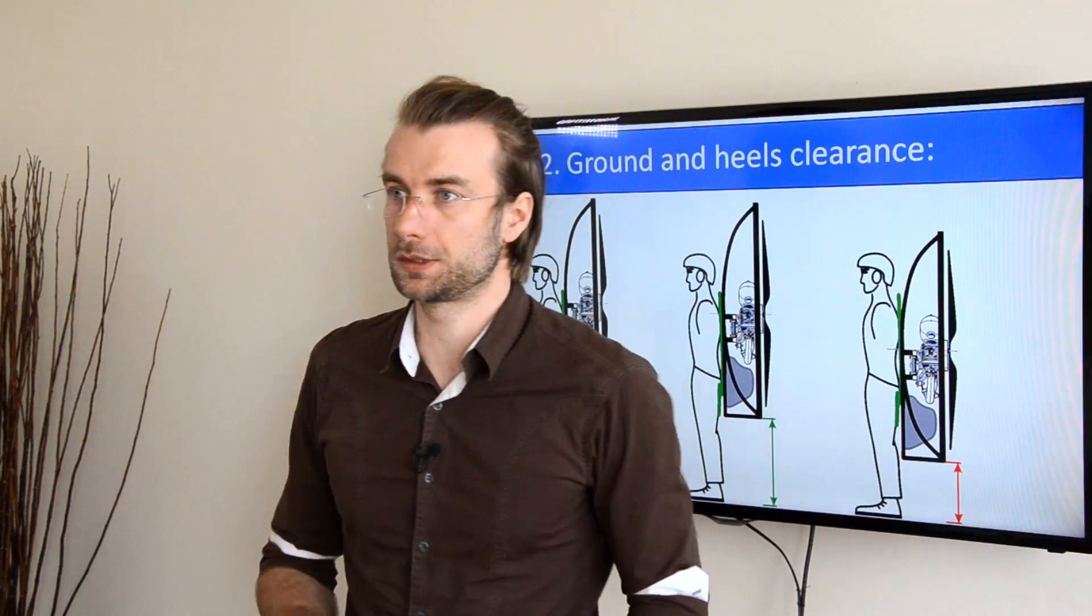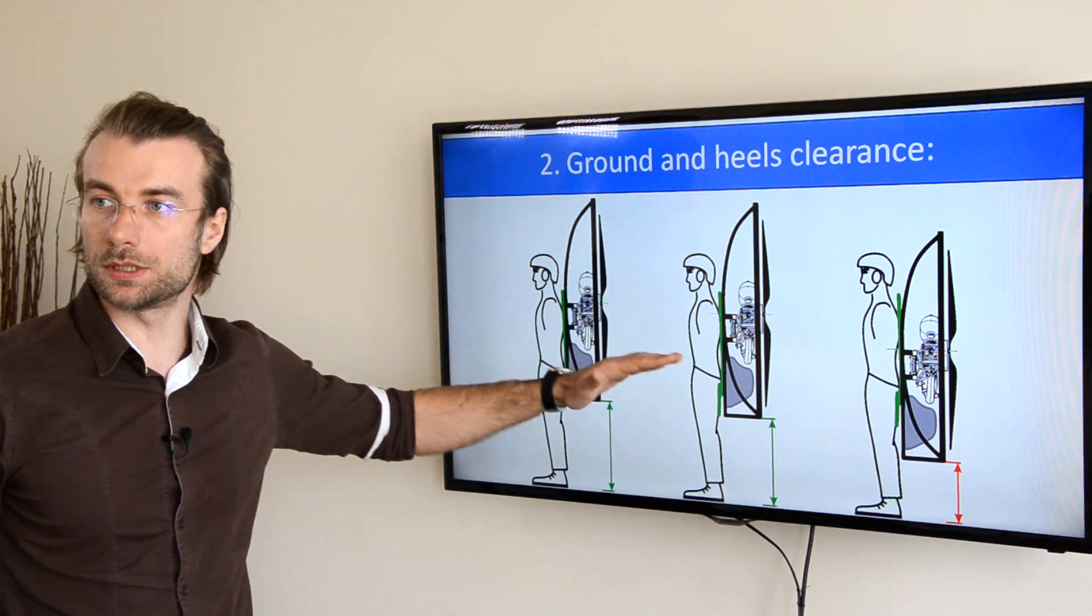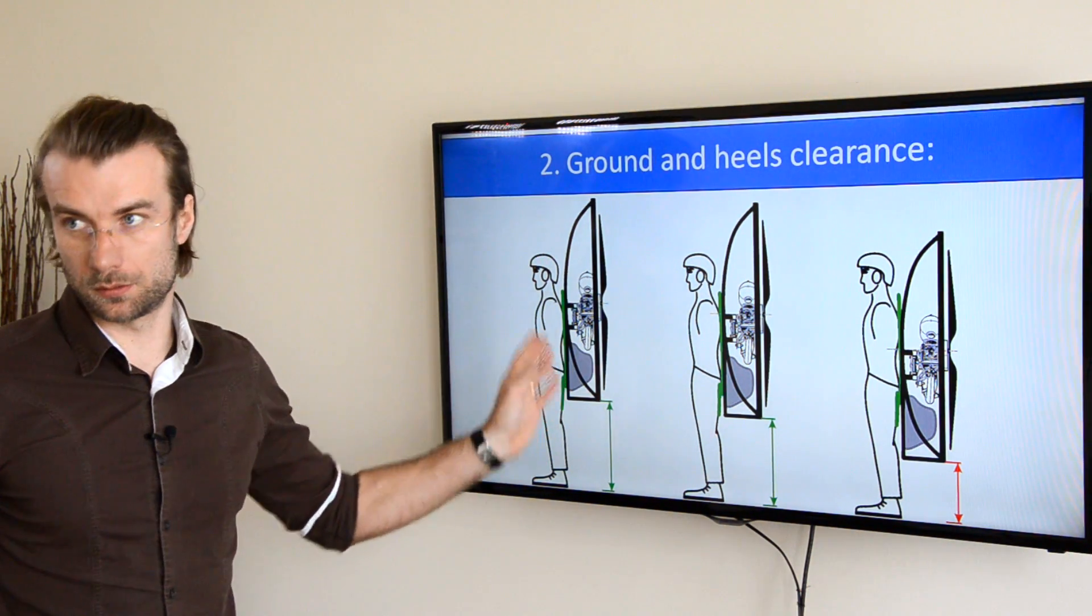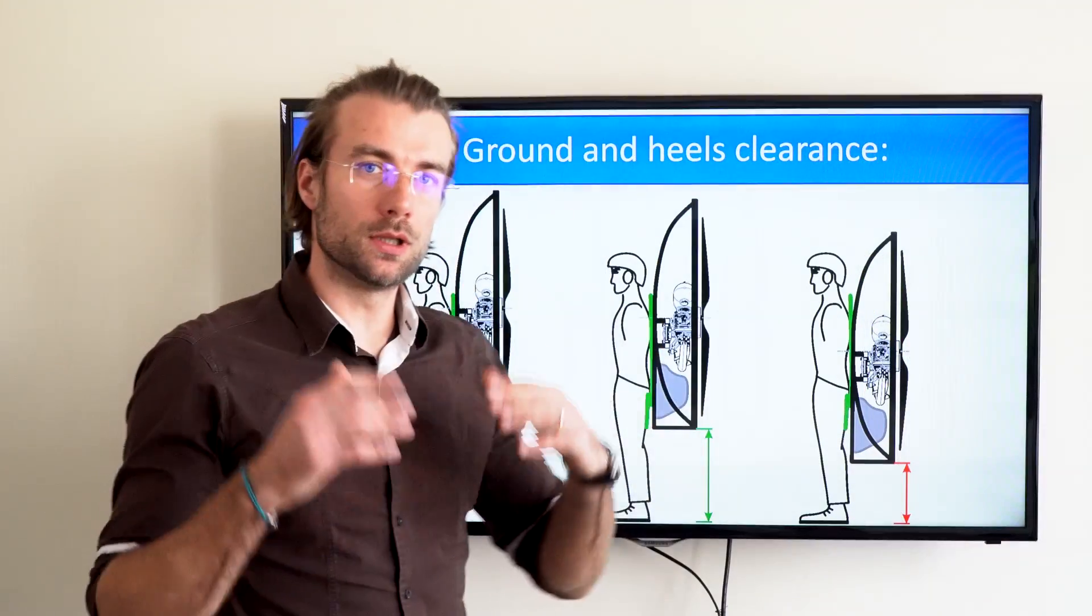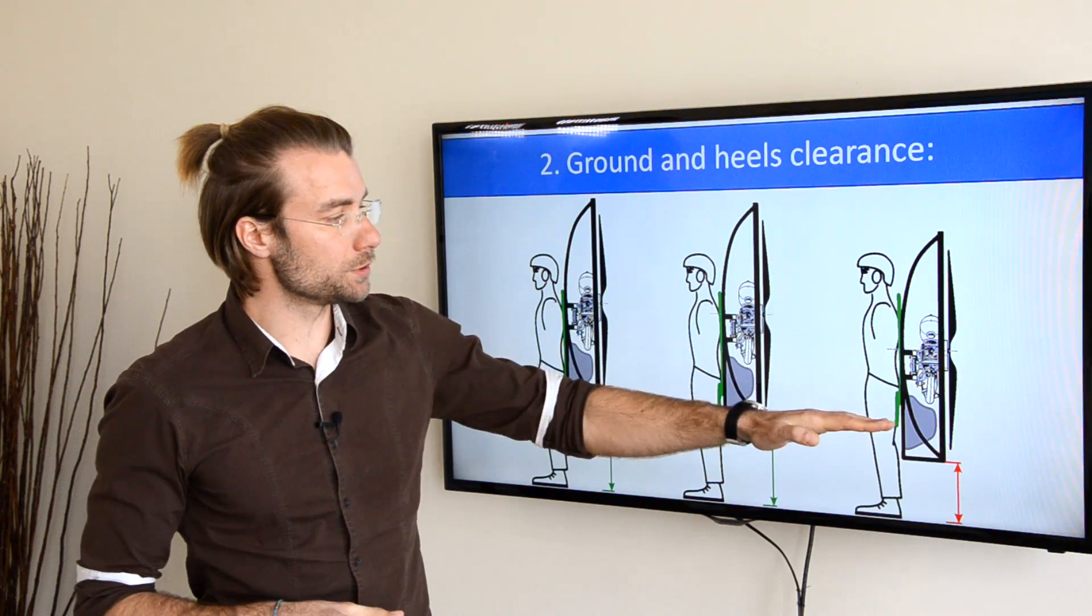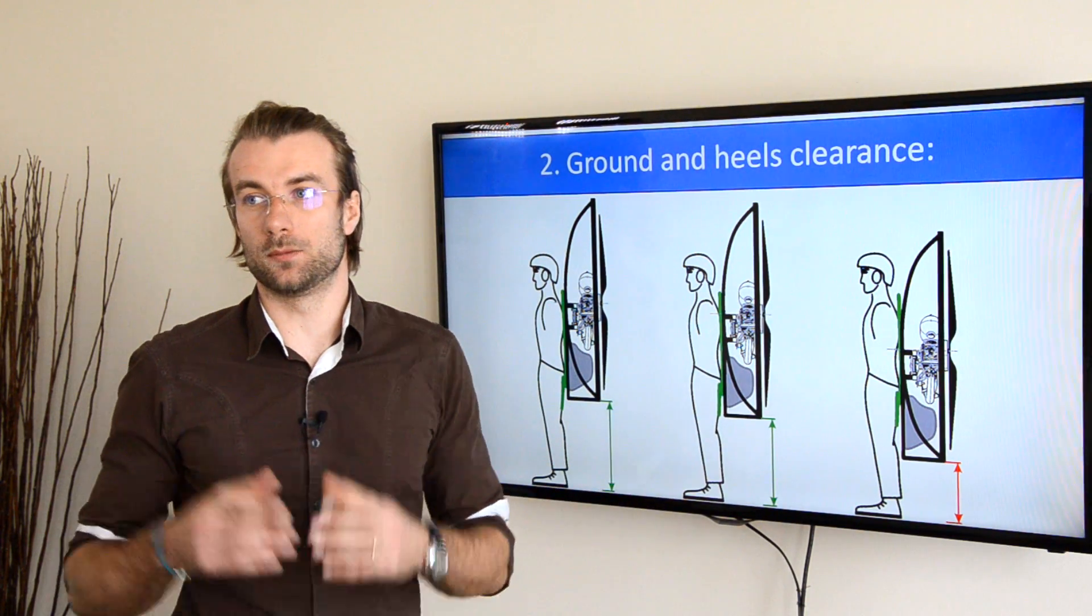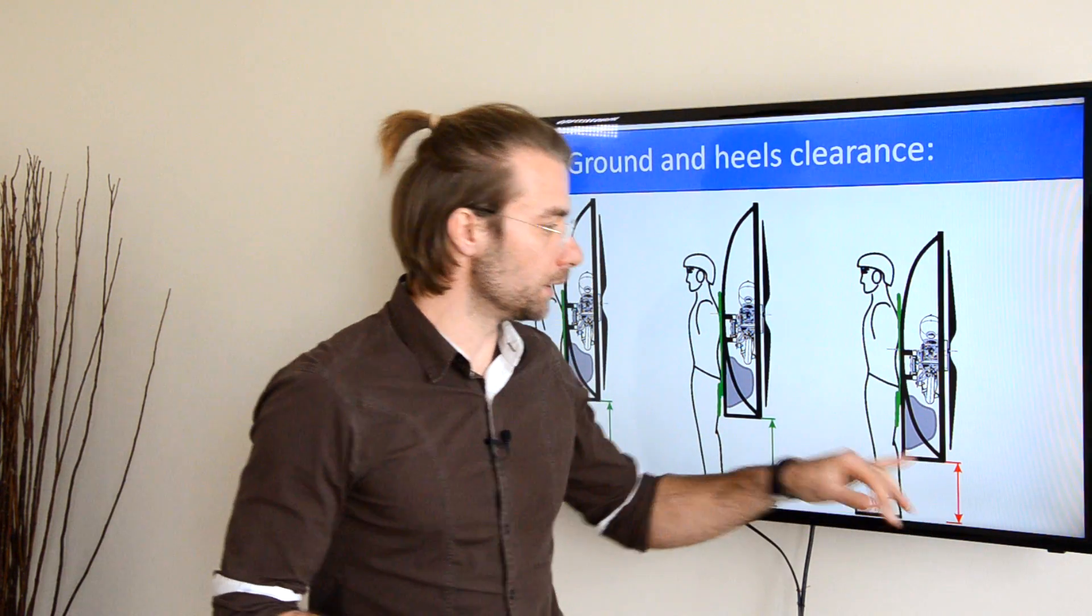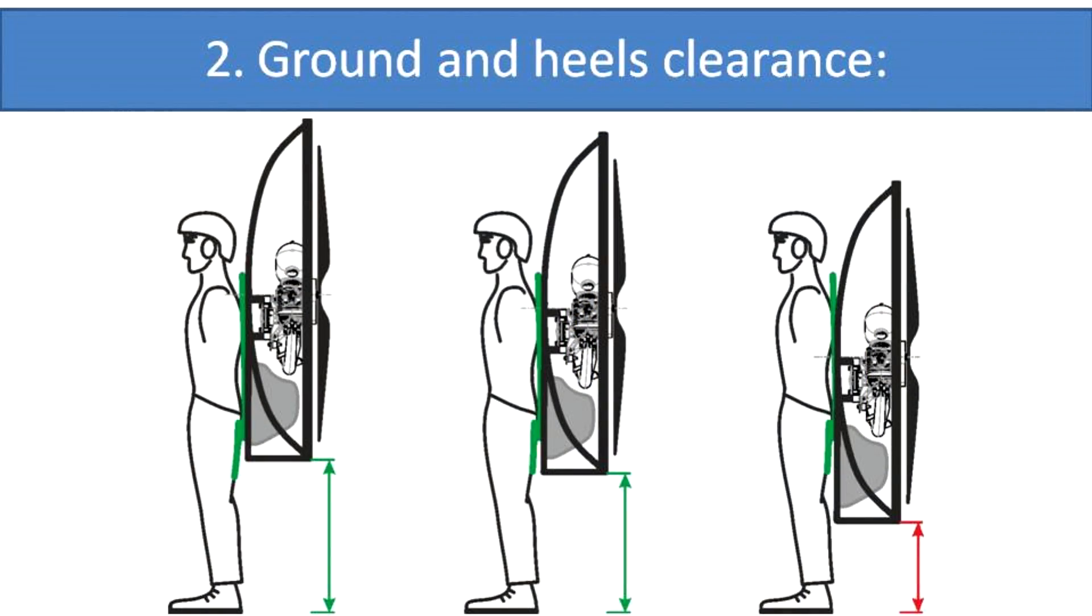Now with the high suspension and the medium suspension system, the paramotor is pretty high on your back. Obviously it depends also on the harness geometry, but if done well, you have enough clearance. With a low suspension paramotor, the cage is positioned way lower. The reason for that we have explained in the previous video. Now there is a higher chance the paramotor will hit your heels while running fast or hit the ground on some small wrong steps.